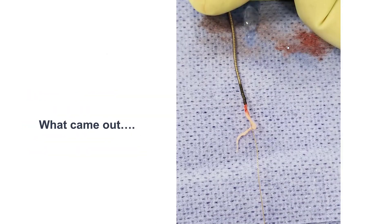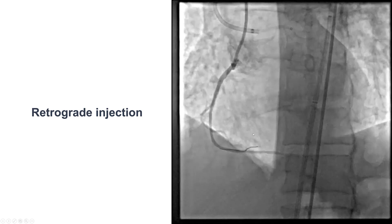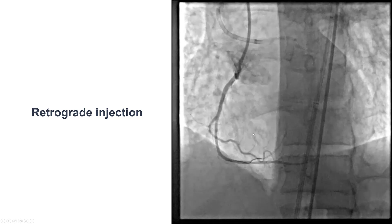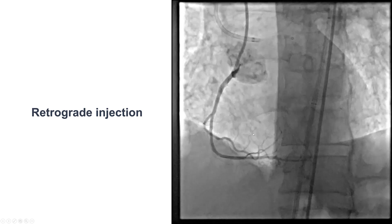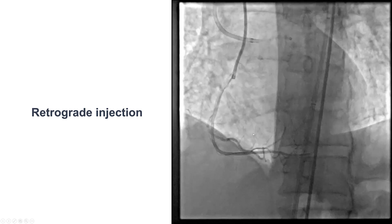During all those attempts, the retrograde wire became deformed and at some point became stuck, and we had to remove all the equipment. What came out showed some piece of tissue — potentially intima — which got us worried, but the patient was stable throughout without any problems.